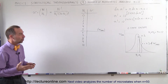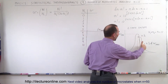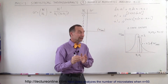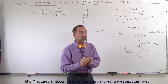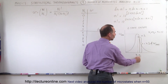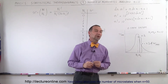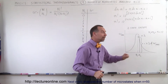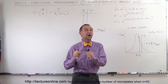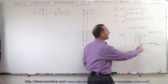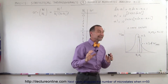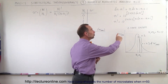Here we have a distribution that shows us how the number of microstates will exist depending upon how many of the objects will be in one state versus the other. The number of microstates will be a maximum when the number of objects in each of the two states is equal to one another — when n1 is equal to n2 — where n1 represents the number of objects in state 1 and n2 represents the number in state 2. Remember that n1 plus n2 equals the total number of objects, in this case 10. We're dealing with a two-state system.